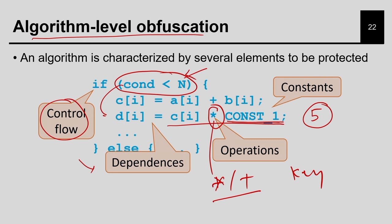With a key I can lock operations, and the fourth thing I can lock is the dependency. Here an operation defines CI and that is getting used later, but I can add some key so that unless you know the correct key you do not know the dependency between these two operations. I can lock this semantic information in the algorithmic input behavior which is the C input code. I can generate an RTL which has all these things locked and I am going to discuss examples of all four techniques.